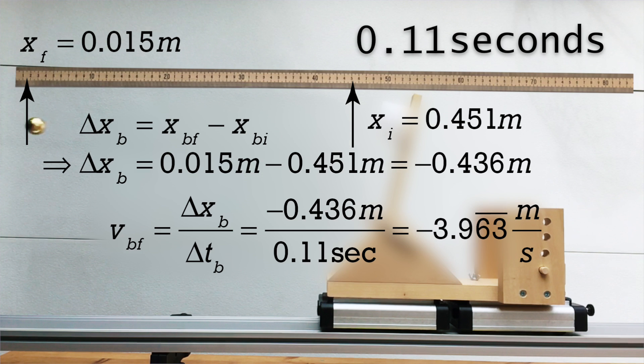the ball goes from a position of 0.451 meters to 0.015 meters in 0.11 seconds. And the velocity of the ball after the explosion equals the displacement of the ball, divided by its change in time, which works out to be negative 3.963, with the 6.3 repeating, meters per second. Again, that's the final velocity of the ball after the explosion.